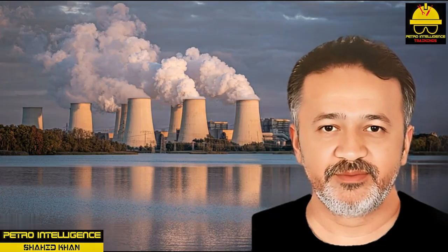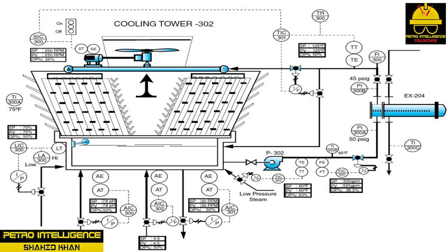Cooling tower system: cooling tower 302 is classified as an induced draft, or draw-through, crossflow single-cell device primarily designed to control the temperature on condenser X204. A cooling tower is often referred to as a heat rejection device designed to extract excess heat from the returning water and expel it into the atmosphere. This type of heat transfer relies on the principle of evaporation.